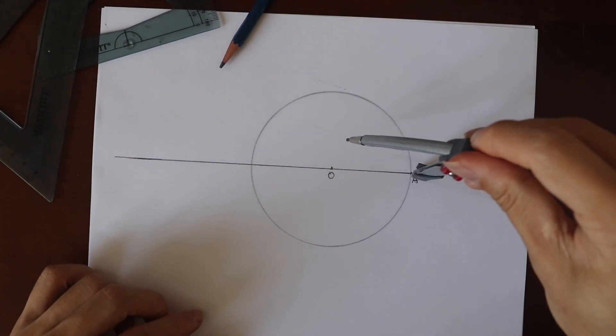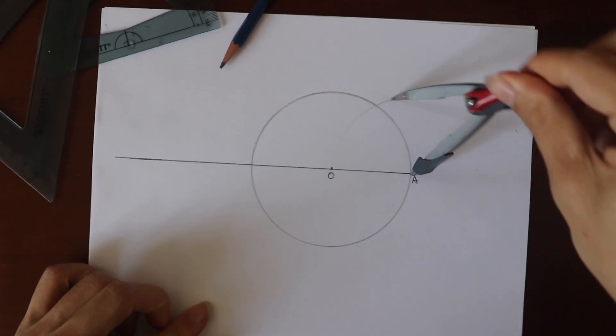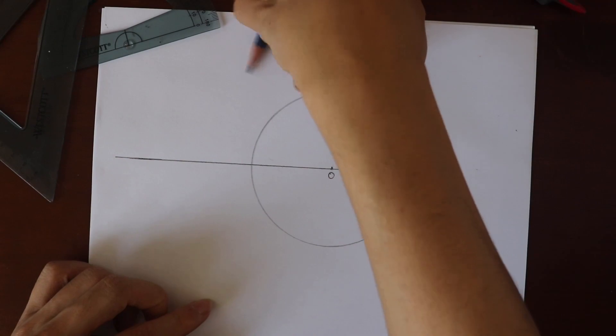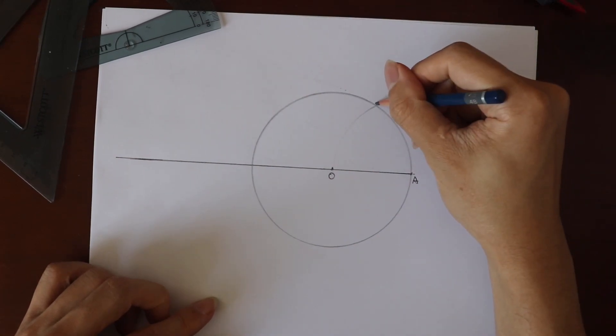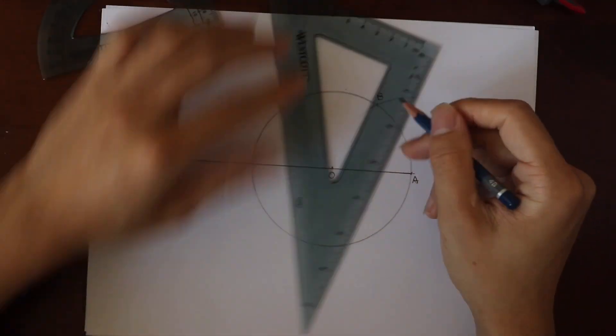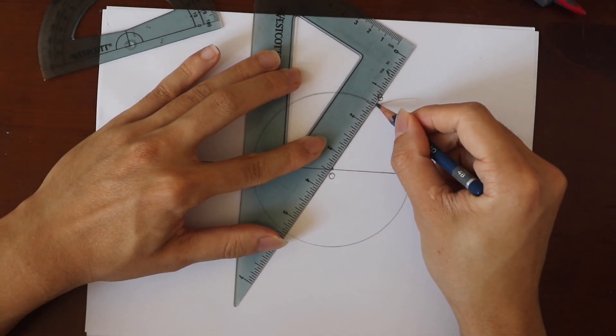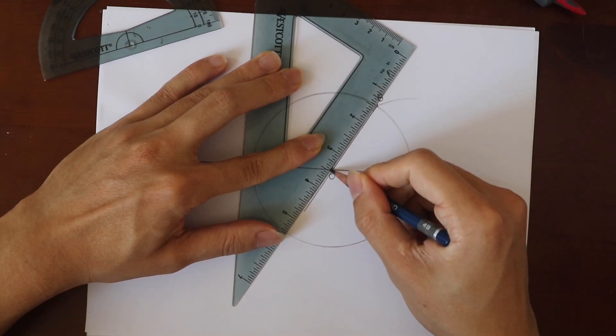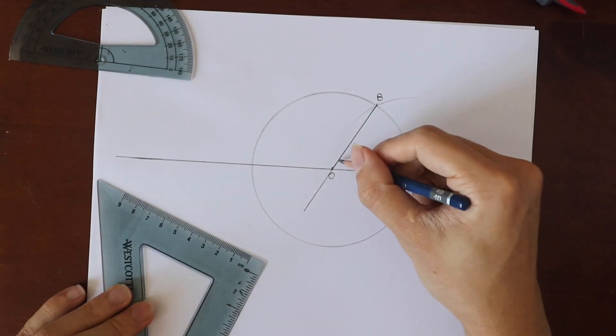So I start drawing the 60-degree angle with ruler and compass. We draw a circle with center O and use the same radius to draw another circle at the point A. The intersection gives us the point B and the angle AOB is 60 degrees.